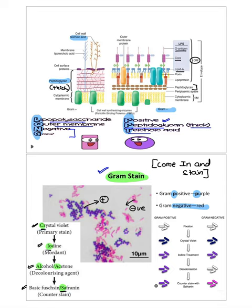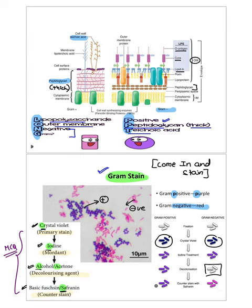Crystal violet is the primary stain — both gram positive and gram negative stain violet initially. After the mordant (iodine), we decolorize. Gram negative organisms lose their color and take up the counterstain safranine, appearing pink to red. Gram positive organisms retain the original purple/violet color since they do not lose their color.